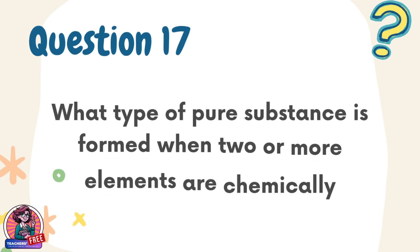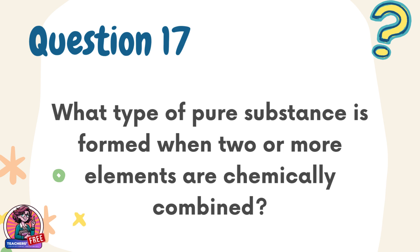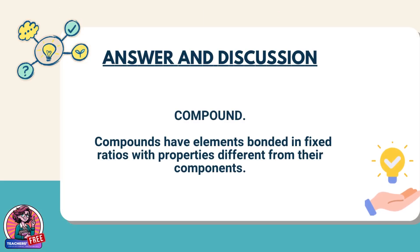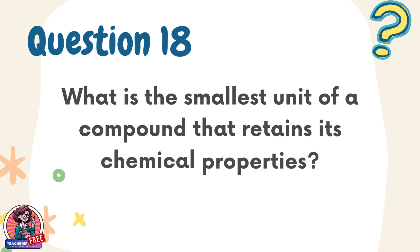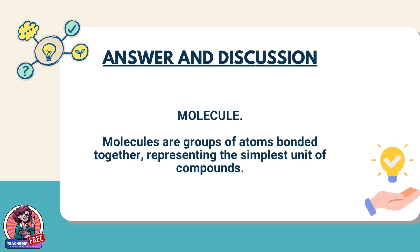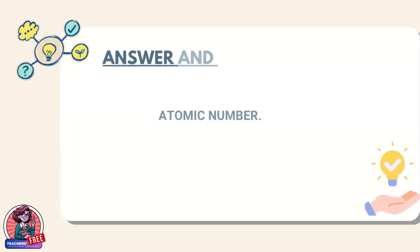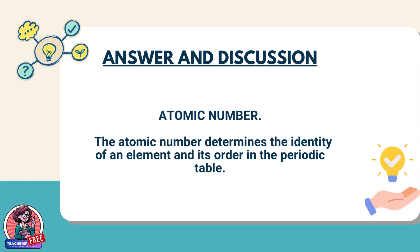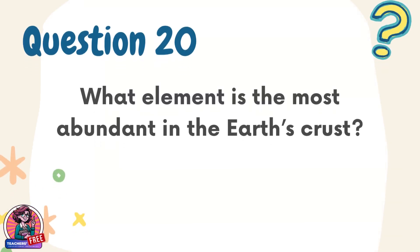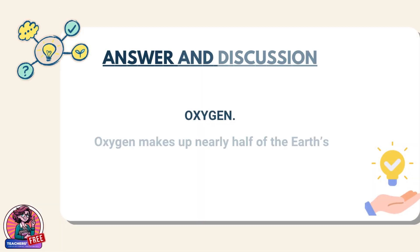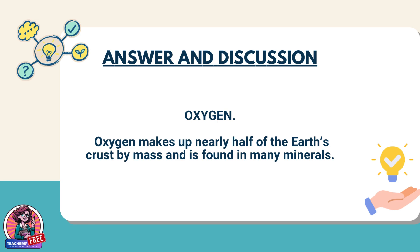Question 17. What type of pure substance is formed when two or more elements are chemically combined? Answer: Compound. Compounds have elements bonded in fixed ratios with properties different from their components. Question 18. What is the smallest unit of a compound that retains its chemical properties? Answer: Molecule. Molecules are groups of atoms bonded together, representing the simplest unit of compounds. Question 19. What number identifies an element by the count of its protons? Answer: Atomic number. The atomic number determines the identity of an element and its order in the periodic table. Question 20. What element is the most abundant in the Earth's crust? Answer: Oxygen. Oxygen makes up nearly half of the Earth's crust by mass and is found in many minerals.